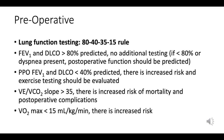The 80-40-35-15 rule in preoperative lung function testing is a helpful mnemonic to guide clinicians. The 80% rule: when FEV1 and DLCO are both greater than 80% of predicted values, it indicates relatively healthy lung function and no further preoperative lung function testing is required. If either is less than 80%, or the patient has dyspnea, further testing such as predicting post-operative function is recommended.